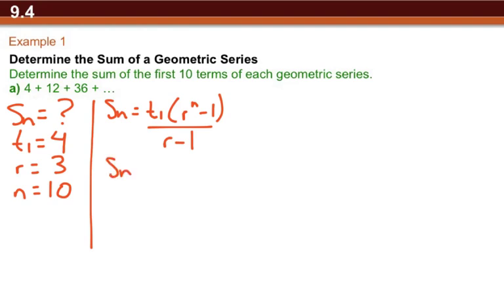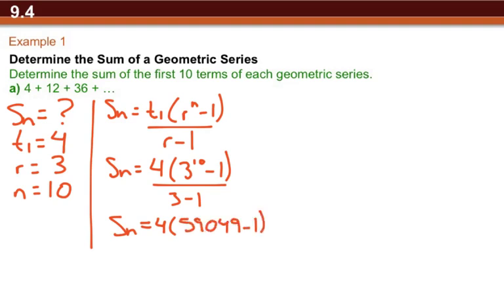So we take and we fill in what we know. First step, following order of operations, we should do 3 to the 10th. It's 59,049. We can do 3 minus 1 on the bottom here, that's 2.